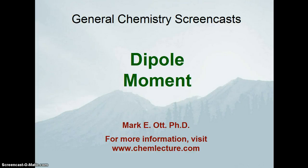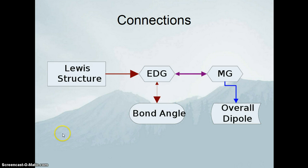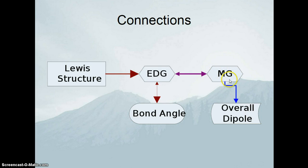Here we're going to talk about dipole moments. Dipole moments come about from our molecular geometry. We've talked about how we've drawn Lewis structures, and Lewis structures based on the locations of the electrons allow us to determine our electron domain geometry. Based on our electron domain geometry we can make estimations as to what the bond angles will be, and from electron domain geometry based on groups of electrons, bonds, and lone pairs we can determine our molecular geometry.